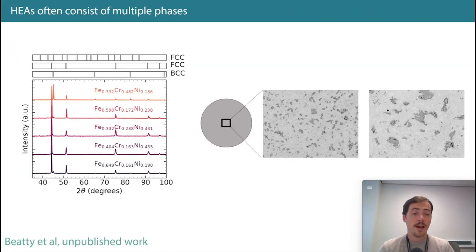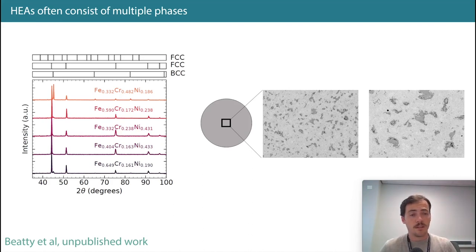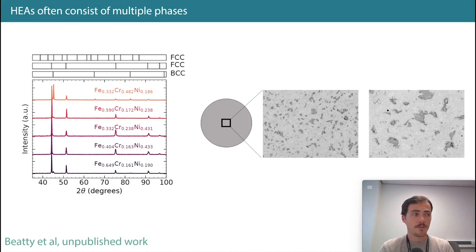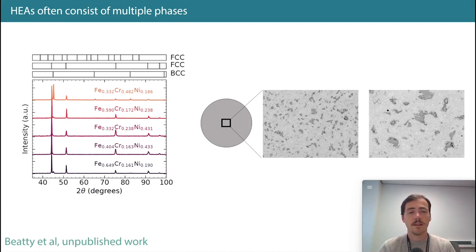If you're familiar with high entropy alloys, you know they very often consist of multiple phases — in fact, that's a lot of the origin of their interesting properties. In these materials, you oftentimes have FCC and BCC structures where many different elements come together and form a random solid solution in that phase. That's not always the case; sometimes you have a mixture.